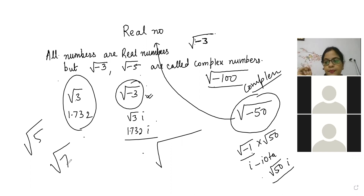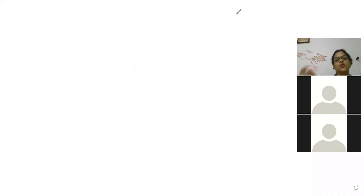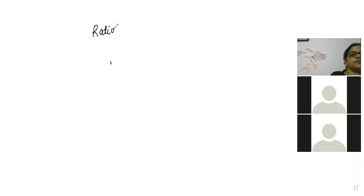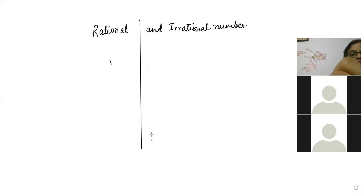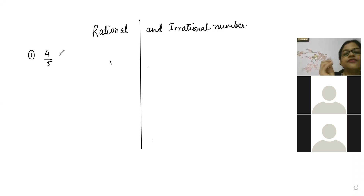So we have learned about real and complex. Now we will go towards rational and irrational numbers. Any number of the form P by Q comes under rational number.